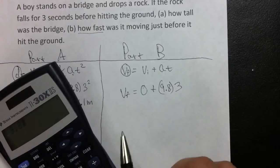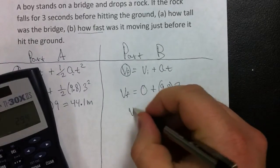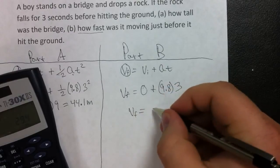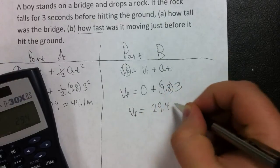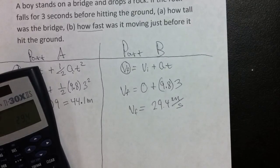To find our answer, we take 9.8 times 3, and that's equal to 29.4. So, the velocity just before it hits the ground is 29.4 meters per second. And that concludes this problem.